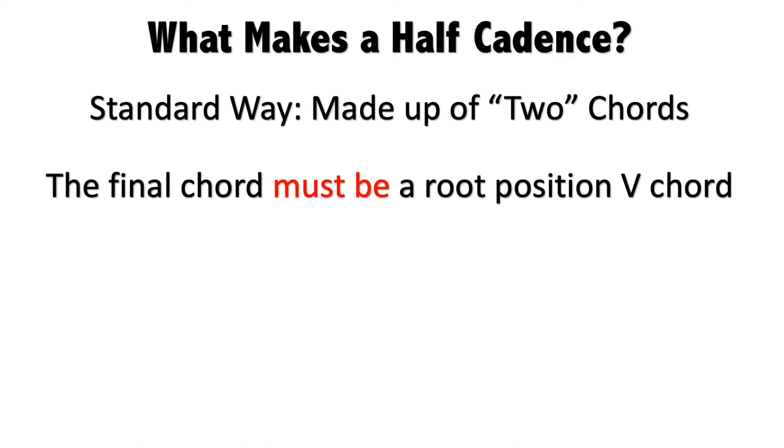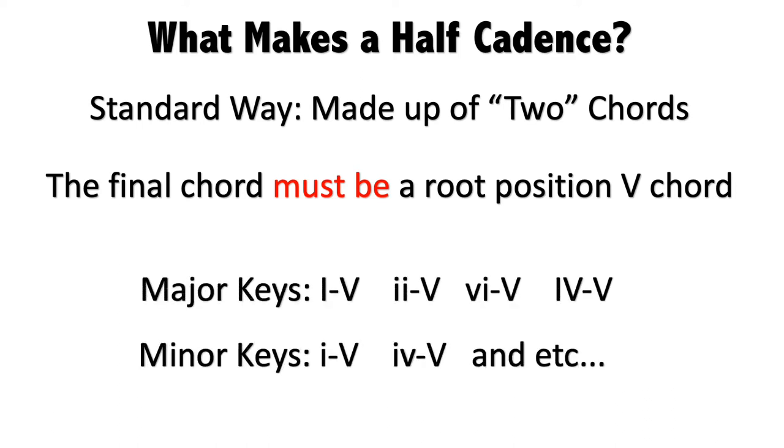What are some examples of half cadence? In major keys we can have I-V, ii-V, vi-V, or IV-V. Since all of these end on a V chord, they are all half cadences. Same in minor keys - we can have i-V, iv-V, and so on. As long as the final chord is a root position V chord, then it's a half cadence.